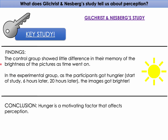The findings were that the control group — participants who ate as normal — showed little difference in their memory of the brightness of pictures as time went on; they adjusted them accurately. Whereas in the experimental group, as participants got hungrier, the images were set brighter than the original. This increase in perceived brightness occurred progressively from the start of the study, at six hours, and again at 20 hours.